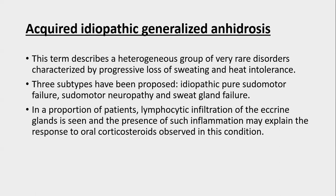Acquired idiopathic generalized anhidrosis is a heterogeneous group of rare disorders characterized by progressive loss of sweating and heat intolerance. There are three subtypes: idiopathic pure pseudomotor failure, pseudomotor neuropathy, and sweat gland failure. In a proportion of patients, lymphocytic infiltration of eccrine glands is seen, and such inflammation responds to oral corticosteroids, which improve these conditions.